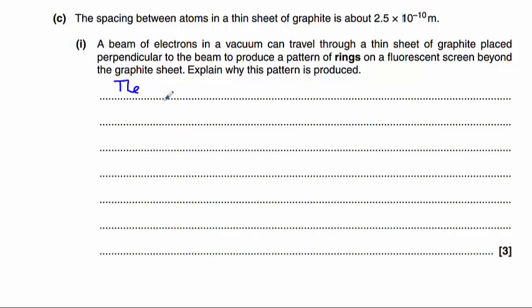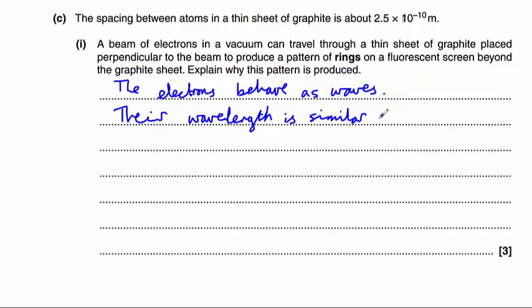So the electrons behave as waves. And the wavelength is similar to the spacing. Therefore, diffraction occurs, producing the ring pattern.